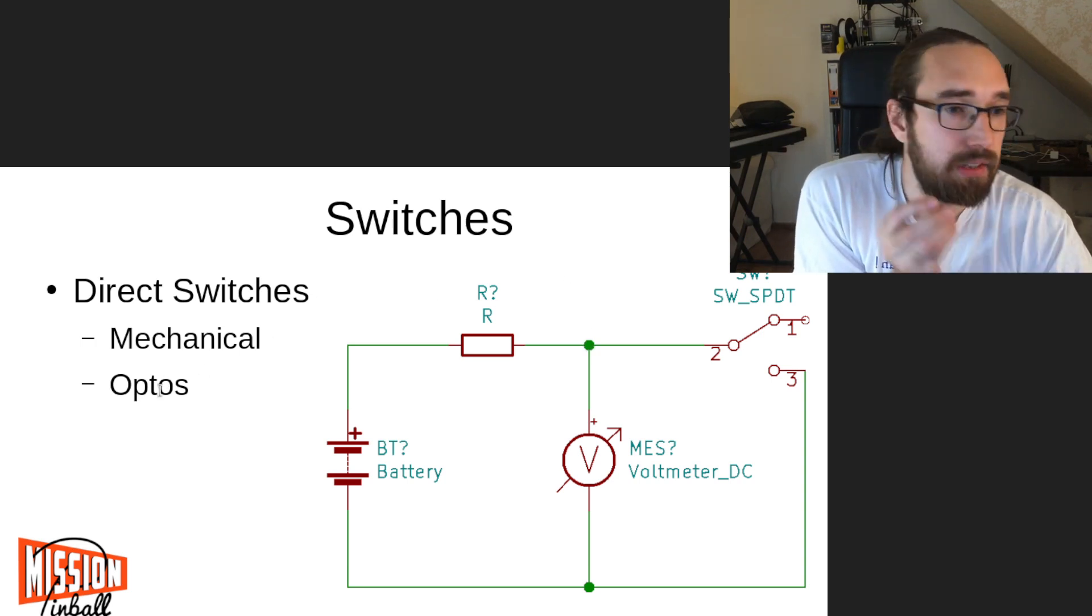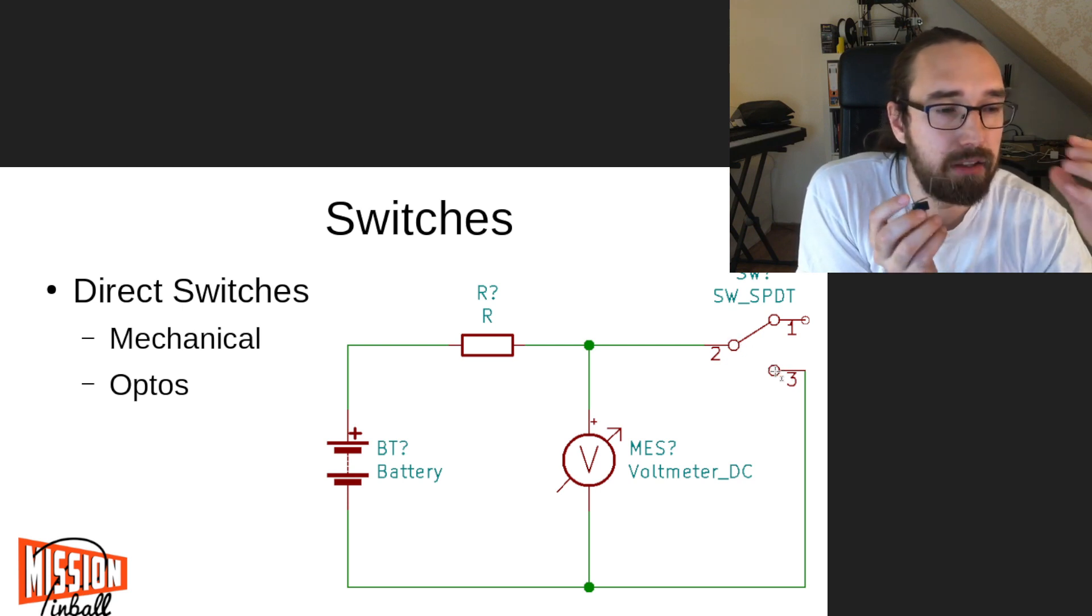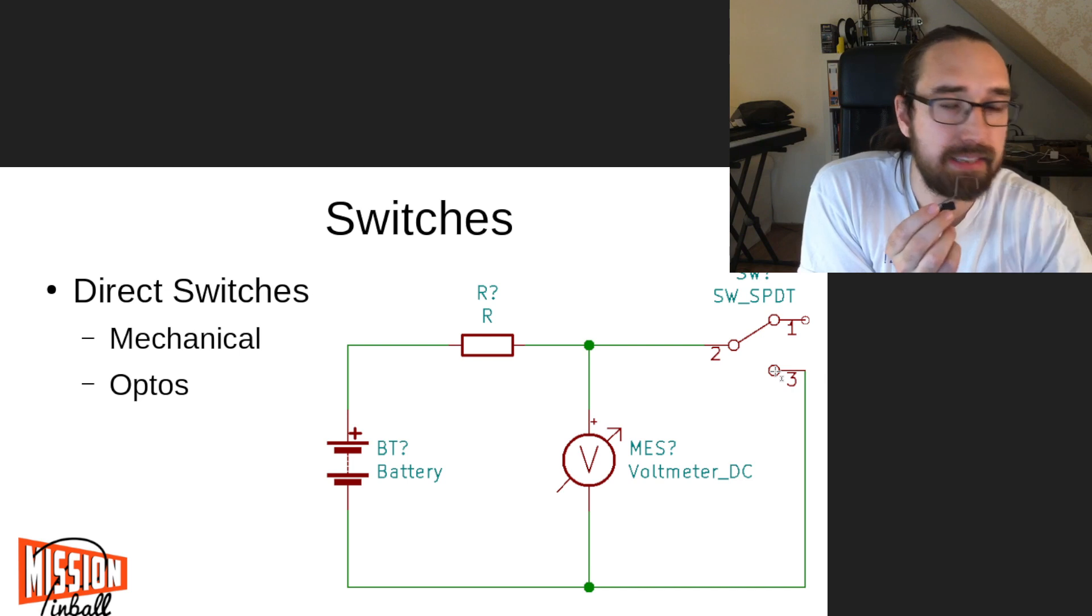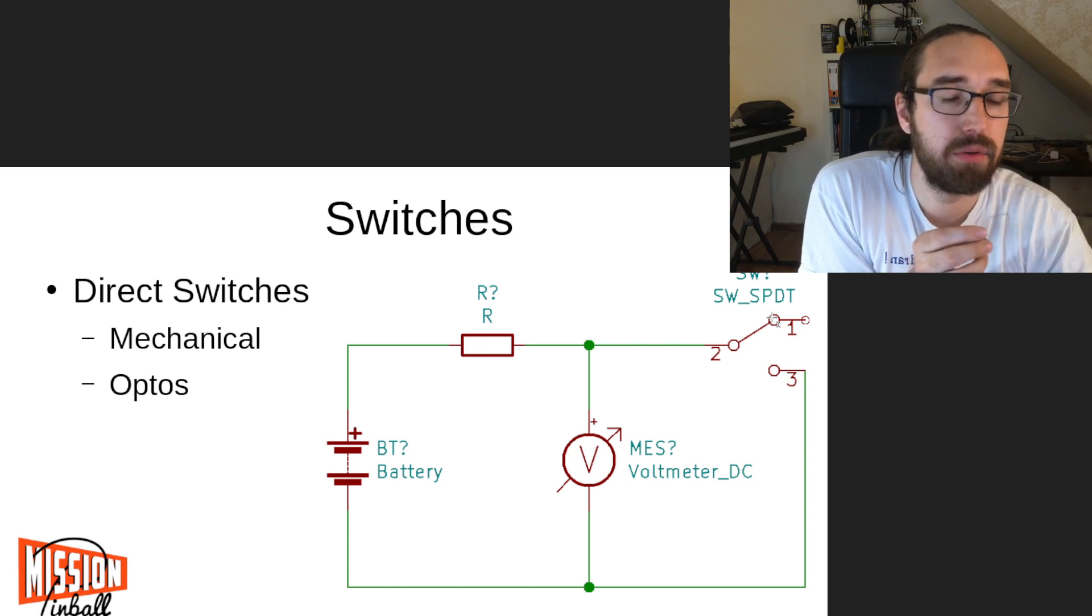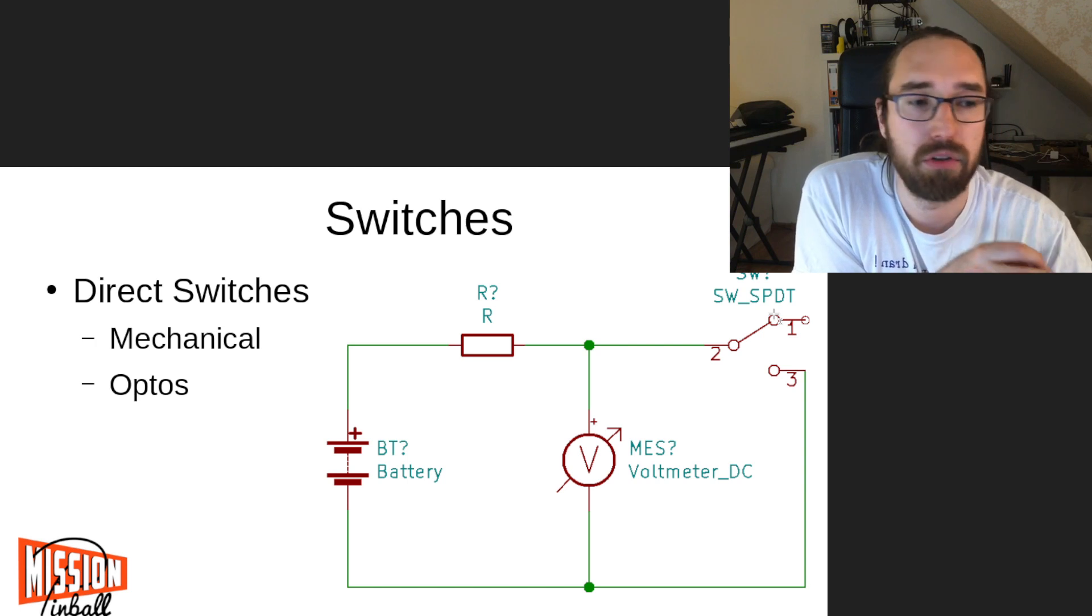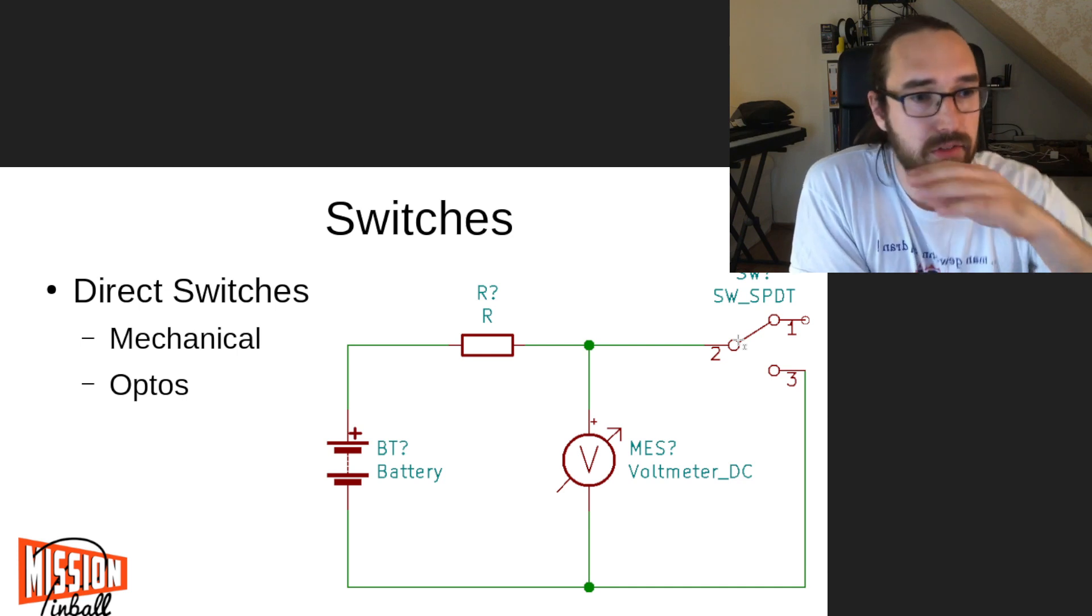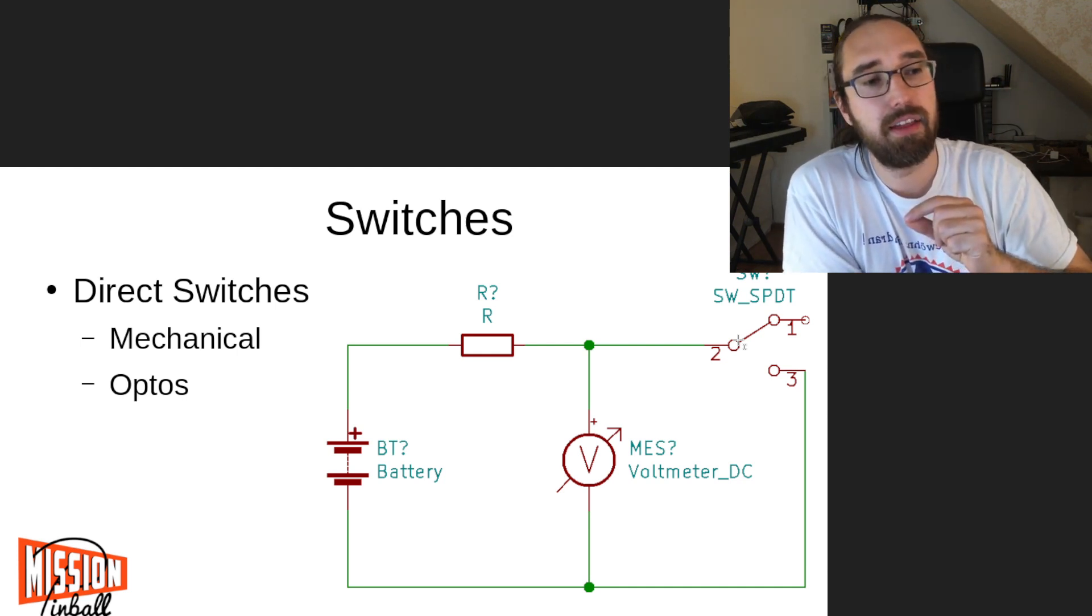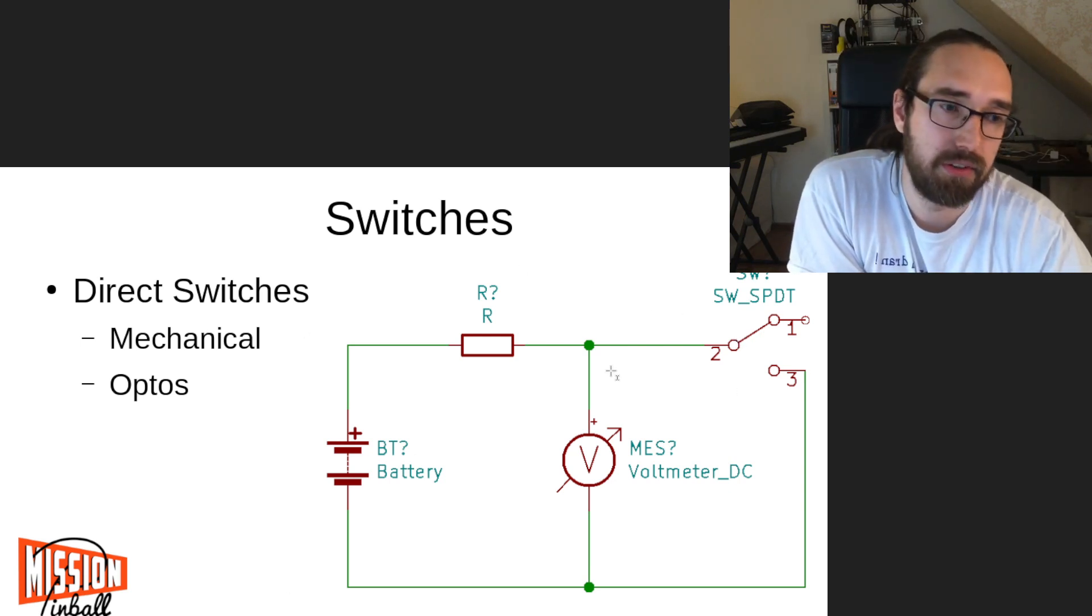For optos that's usually inverted. They will be default closed here. And then if the light beam breaks, they will open. So that's why we typically connect those and configure those as normally open. This input type which you configure in your pinball configuration, so that those optos are inverted. That's the reason for that. They usually conduct voltage and draw the voltage to zero. And if they break, they are opening. So that's how direct switches work.